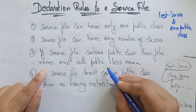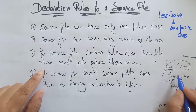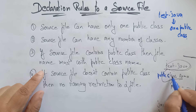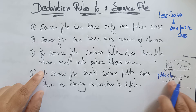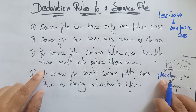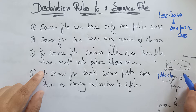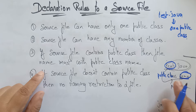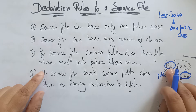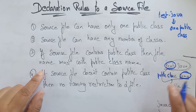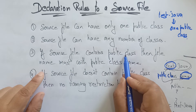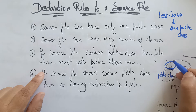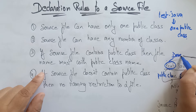Suppose the file is test.java and I declare a class as public — whenever I use a public class, these two names must be the same. If I use 'demo' as the class name but 'text' as the file name, you will get an error. So if the source file contains a public class, the file name must match the public class name — you have to use demo.java only, not test.java.